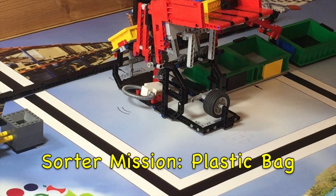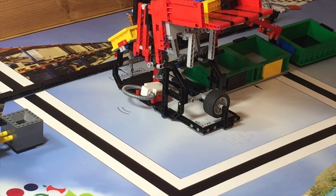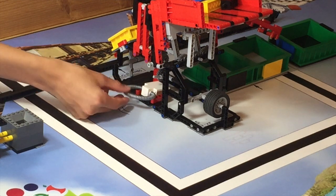Right now you can see that there's a plastic bag jamming the Sorter. You can earn 30 points if you bring the bag back to base.